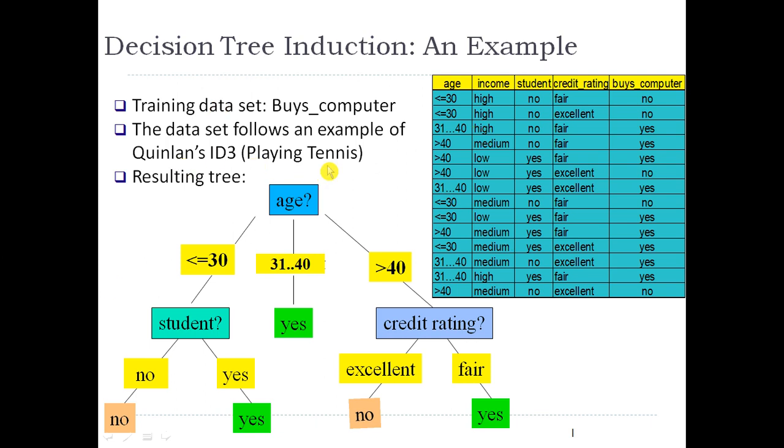Here is the resulting tree. First of all we check the age. There are three partitions: less than or equal to 30, 31 to 40, and greater than 40. In the 31 to 40 age range, the class label is yes throughout.